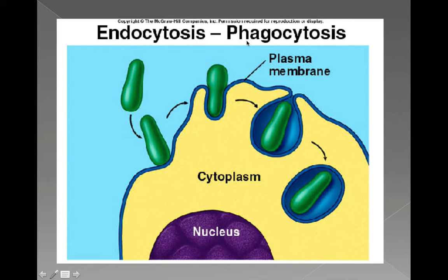Phagocytosis looks very similar. Here we have a solid object — maybe food. The cell membrane surrounds that solid object and creates a vesicle. The cell membrane pinches off and this vesicle goes wherever it needs to. If it's a piece of food that needs to be broken down, it might head towards the lysosome, which contains digestive enzymes that can break that food down further.